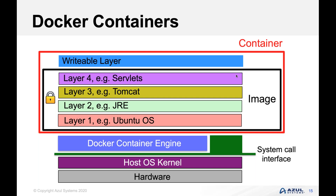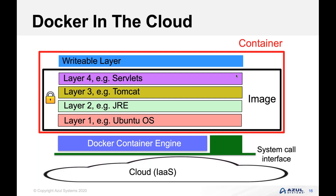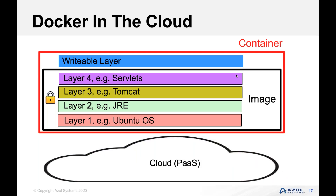When deploying containers into the cloud, we have a couple of options. The first is infrastructure as a service: we provide a host operating system, deploy the Docker container engine on top, put our container with our image on top of that, and everything works. Alternatively, we can use a cloud provider offering platform as a service, where the Docker engine is the platform — we simply provide our container image and tell it to run.